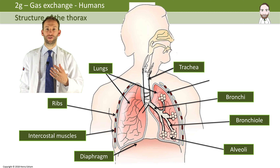Breathing out — exhalation — is the complete opposite. The intercostal muscles relax, the ribs move down and in, the diaphragm relaxes and moves back up, squashing the lungs smaller. The volume inside is much smaller, therefore the air pressure increases, and that forces air out. That is ventilation: inhalation and exhalation, or expiration.